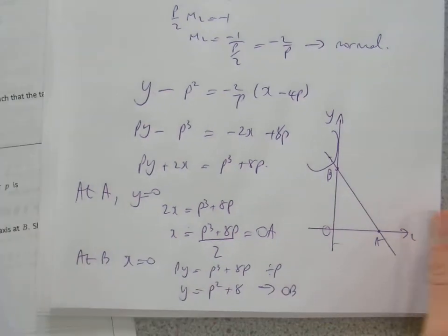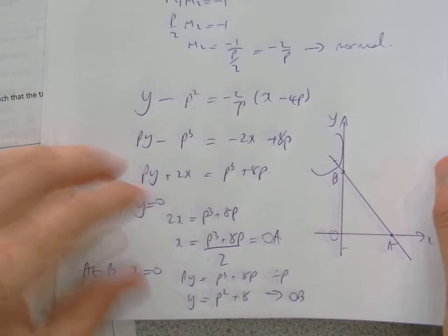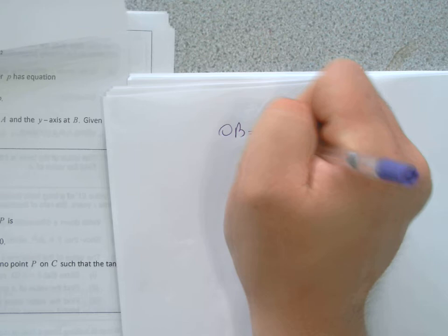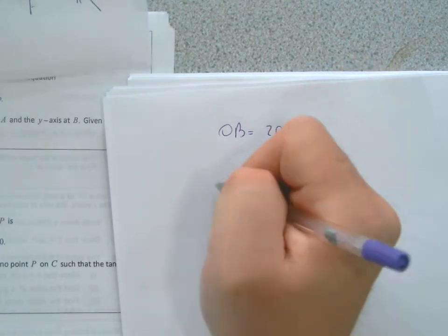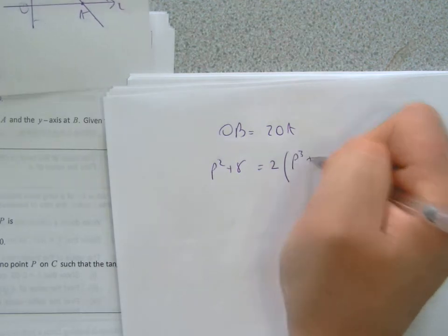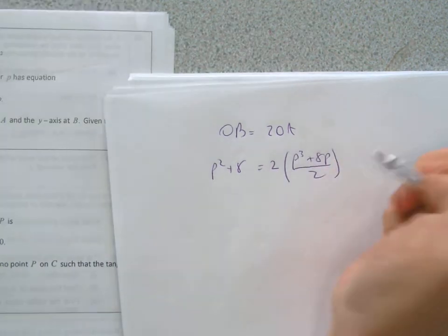It says given that OB equals 2 OA, find the value of p. Well if OB equals 2 OA, OB is p squared plus 8, equals twice OA, which is p cubed plus 8p over 2.